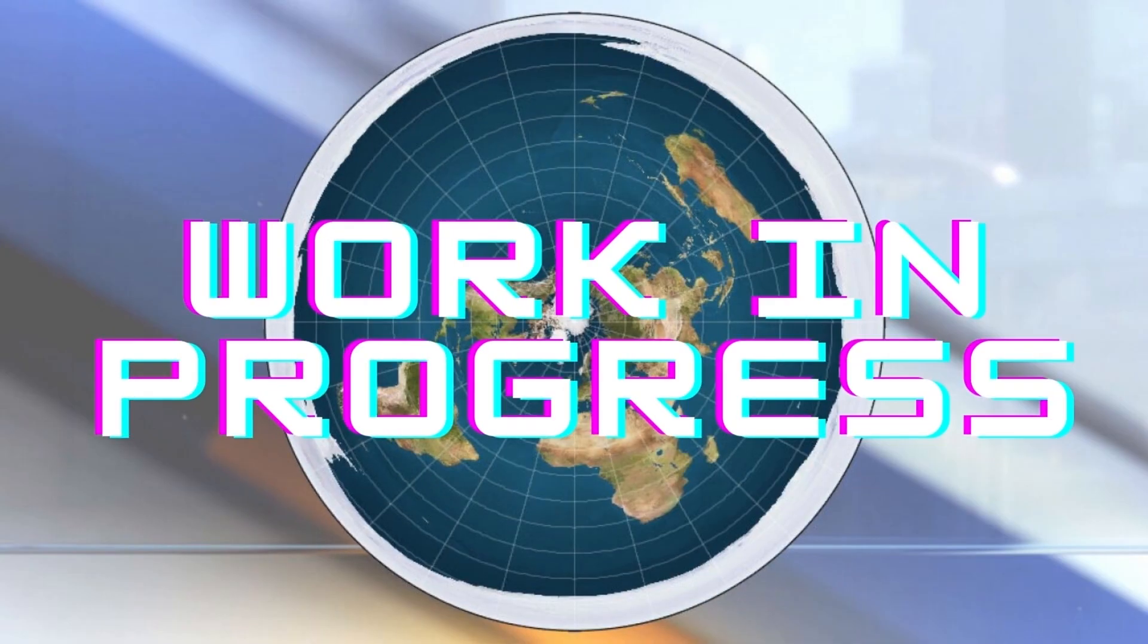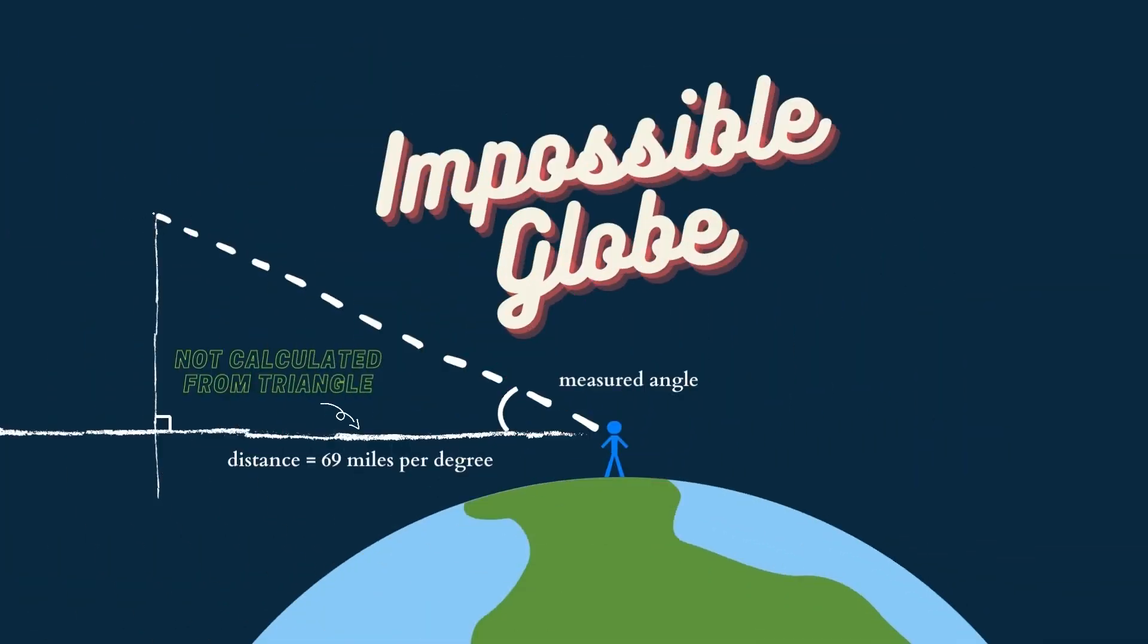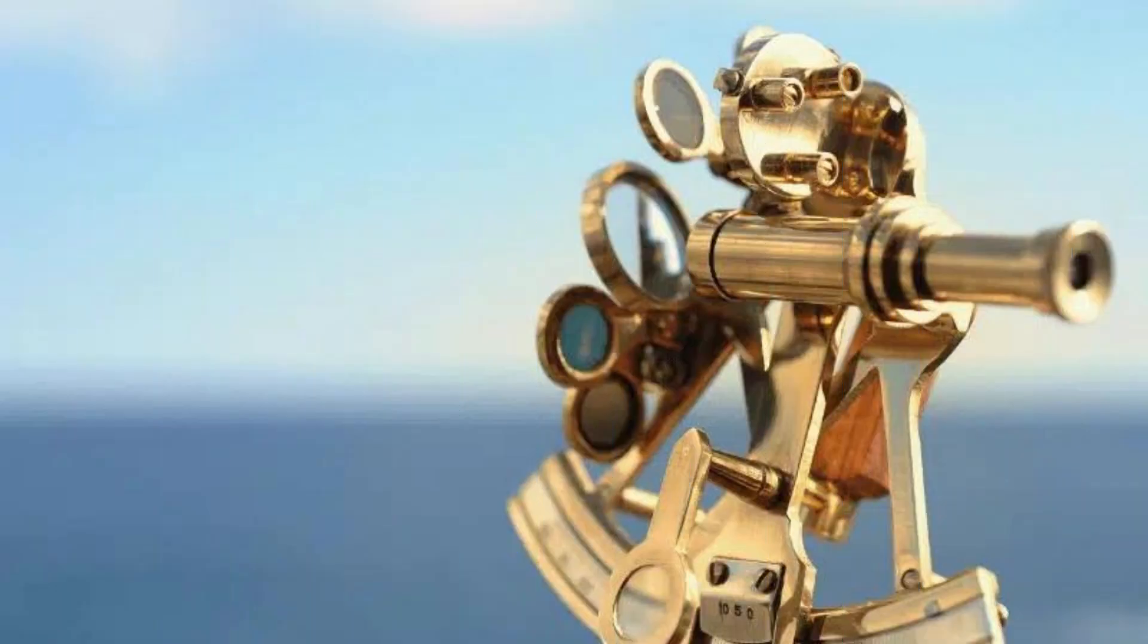Then it states that we should use triangulation to determine the location, even though there exists no working flat earth world map, and finally flat earthers determine that celestial navigation is impossible on a globe. So, that is flat earth celestial navigation, or lack thereof.